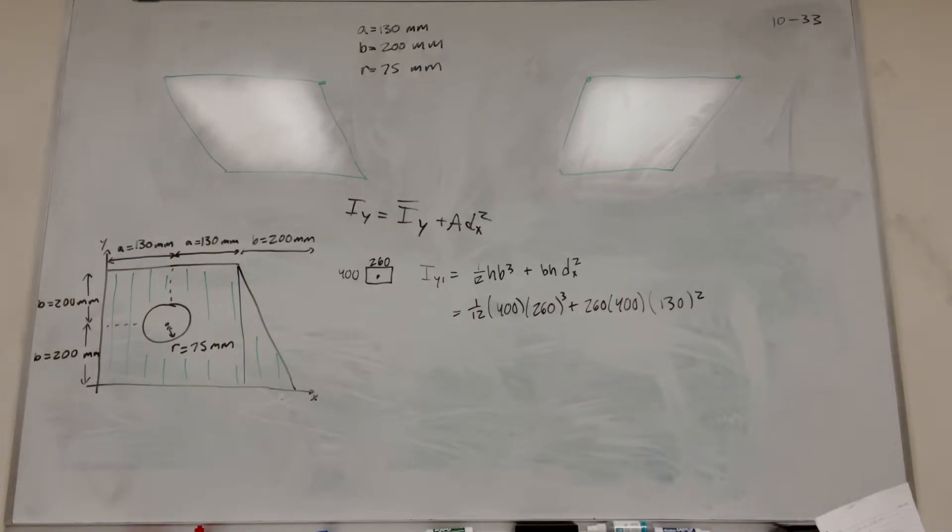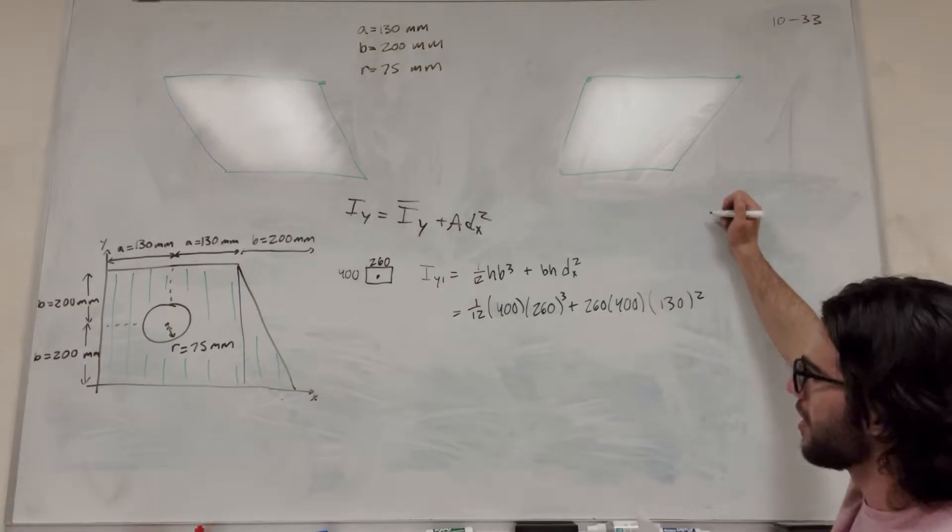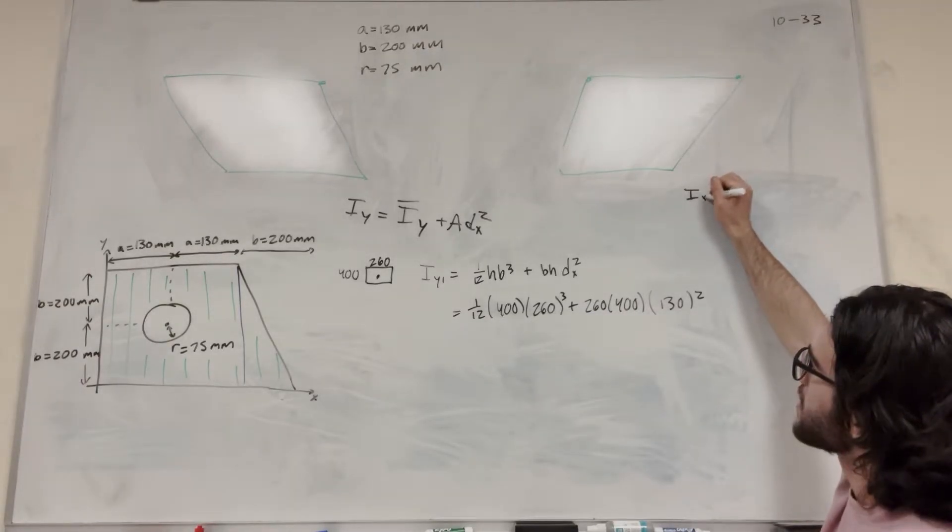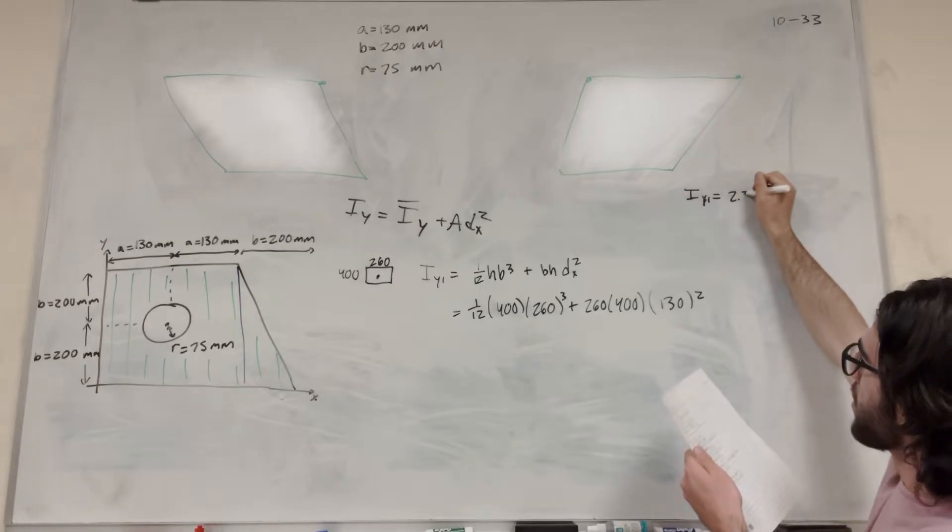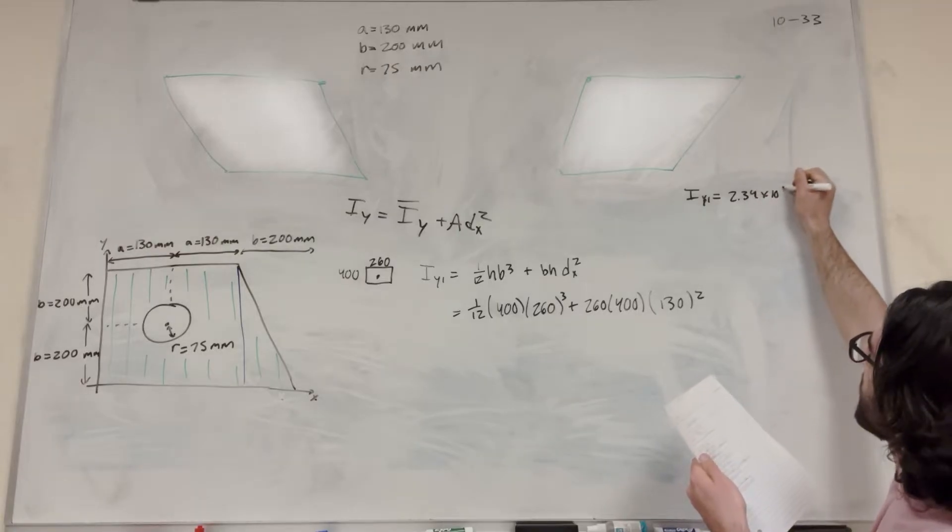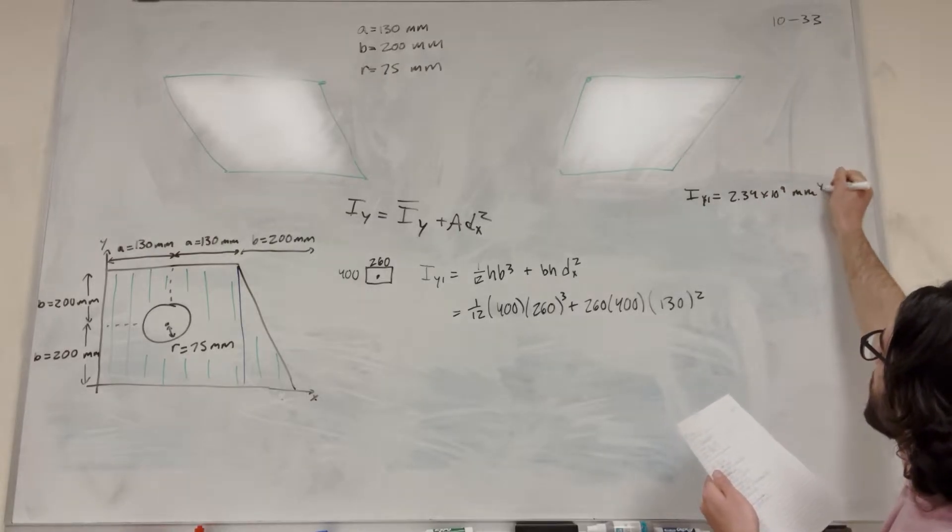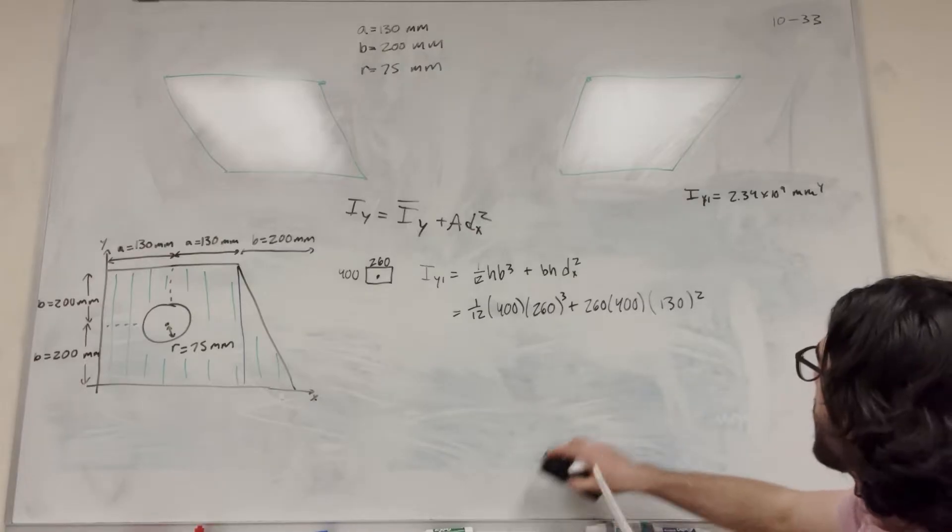That looks right. I'm going to write it over here. I_y of 1 is equal to 2.34 times 10 to the 9th millimeters to the 4th. All right, so we're going to add that.